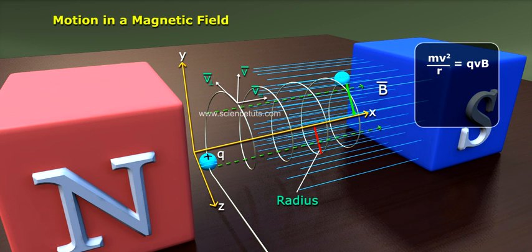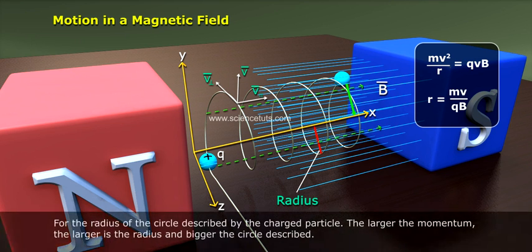Equating the two expressions for centripetal force, M V² / R equals Q V B, which gives R = M V / Q B for the radius of the circle described by the charged particle. The larger the momentum, the larger is the radius and bigger the circle described.